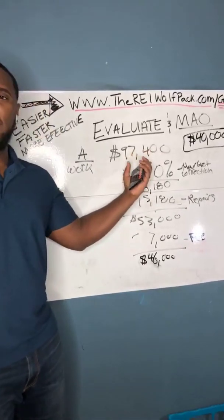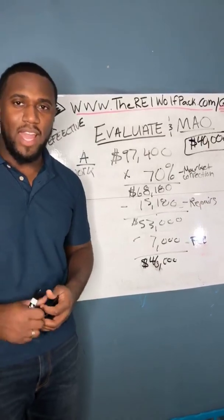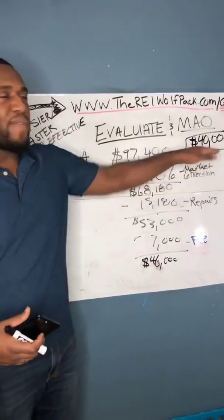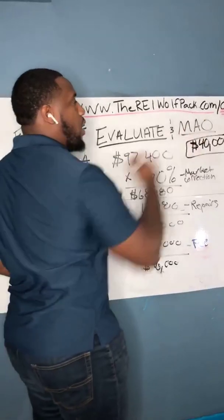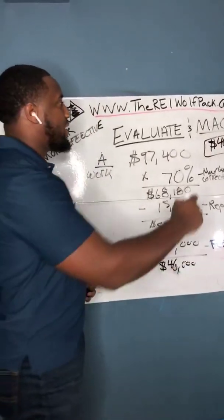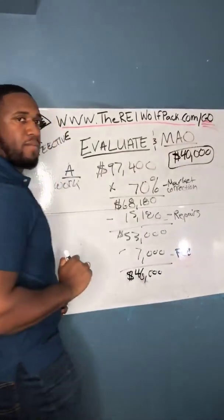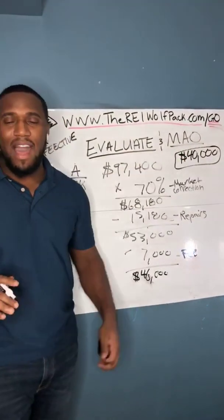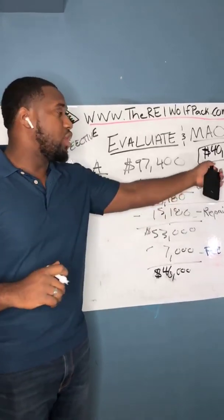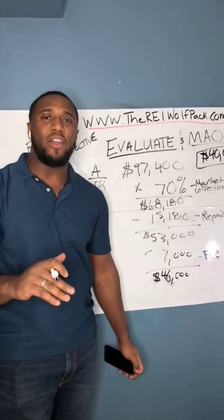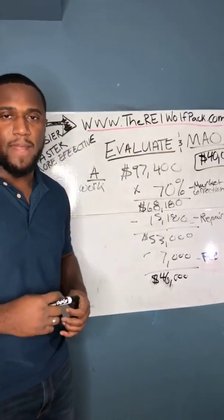The ARV is $97,400, but your offer is going to be $40,000. This offer is called the MAO — your maximum allowable offer. You can't offer anything higher than that. If you do, you won't make money, or you can't fulfill your promise to the seller to get their property under contract and sell it quickly for cash.